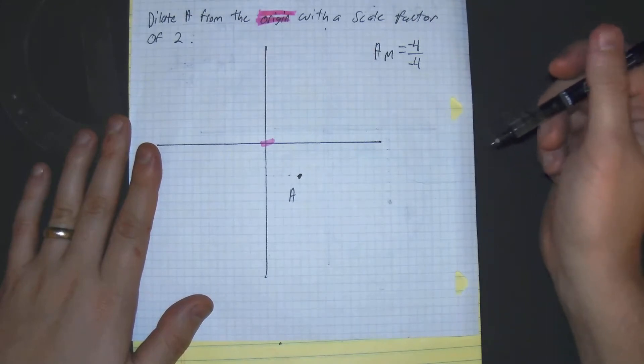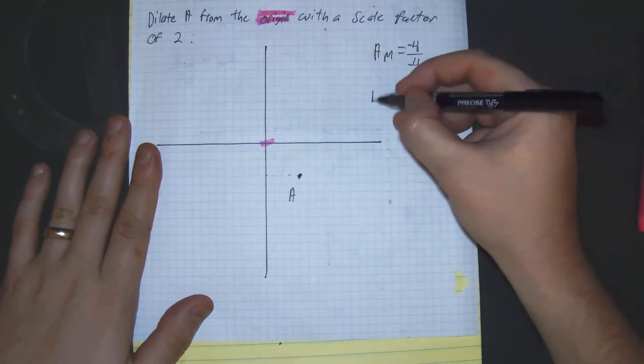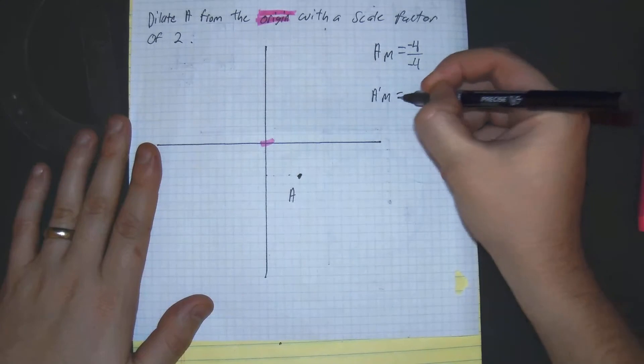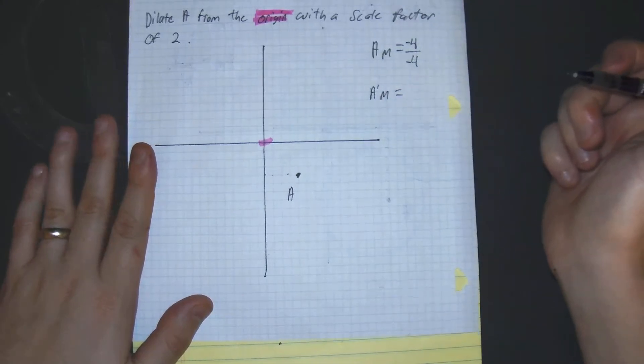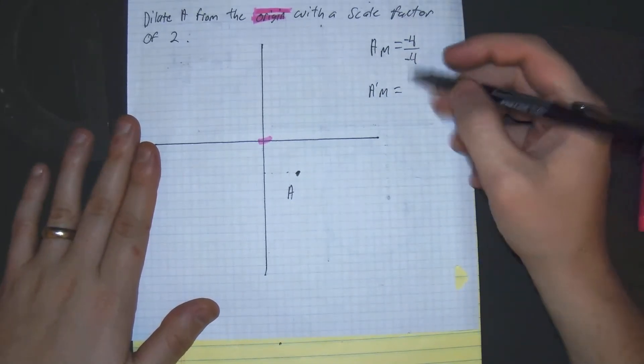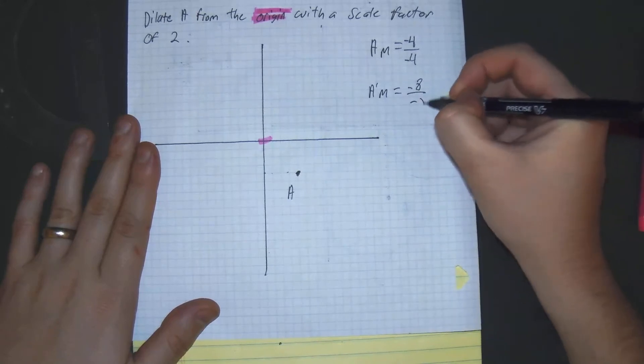So it wants us to have a scale factor of 2, so the scale factor of the new image being dilated would be negative 8 over negative 8.